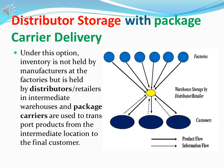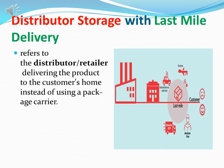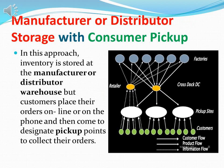The next option is distributor storage with last mile delivery, which refers to a distributor or retailer delivering the product directly to the customer's home instead of using a package carrier. This is typically used for heavy or special products that must be delivered from the store or distribution center directly to the customer. Delivery can be done via drone, car, or truck depending on the product, and last mile delivery is a very important topic in supply chain management.